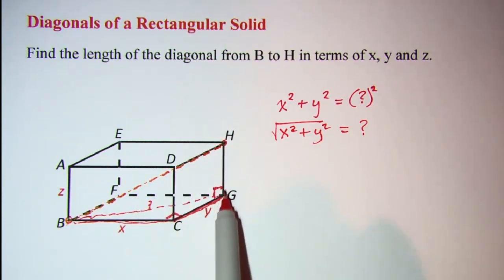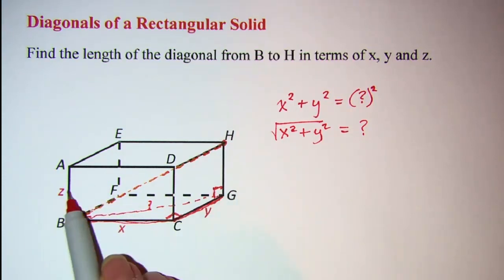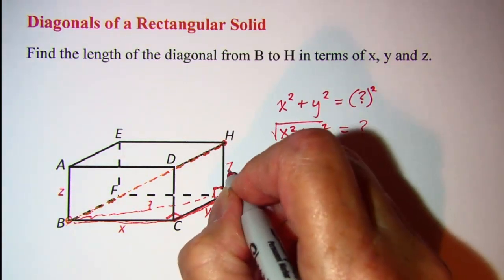I still need this line segment but we know that it's the same as this one over here which is z, so let me label this as z.